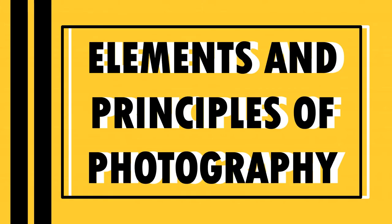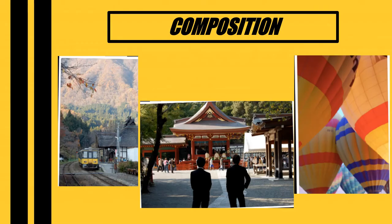Now let's move on to the elements and principles of photography. First is composition. Composition is defined as the placing and arrangement of the different elements within a scene. The common thing here is the subject matter — it defines what is within a scene. This includes the foreground and the background, as well as supporting subjects.